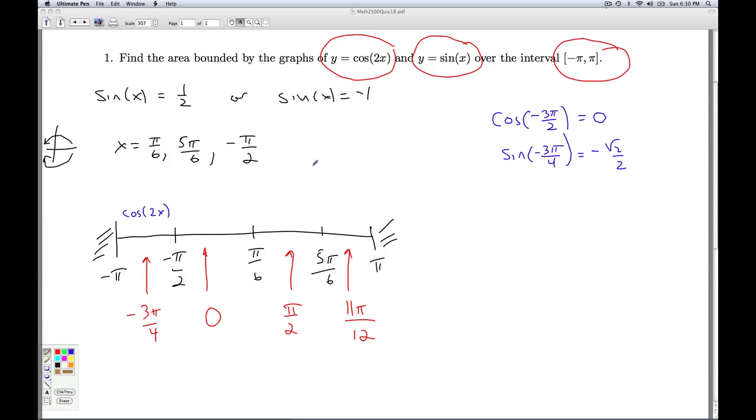Now I plug in 0. The cosine of 2 times 0 is cosine of 0. The cosine of 0 is 1. The sine of 0, however, is 0. So which is bigger here? The cosine of 2x.